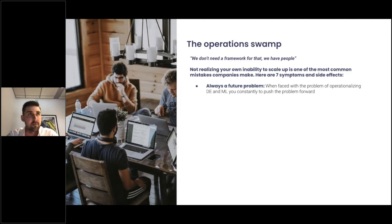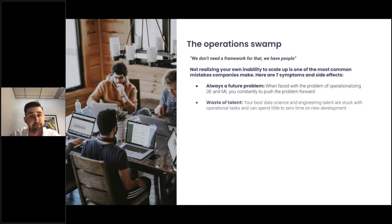The first symptom is that you always view operations as a future problem. You're starting with a proof of concept and you don't want to automate everything because that would take a lot of time — you just want to see if you can get some quick results with this machine learning model. But after three months, six months, twelve months, it's not a future problem anymore. You need to face the problem and you cannot kick the can down the road anymore.